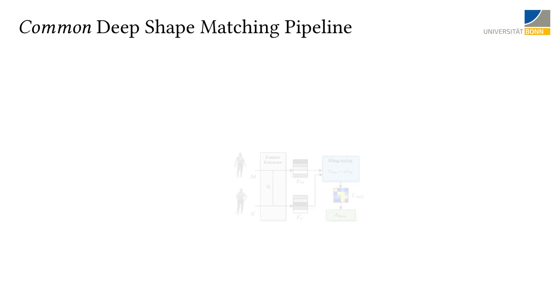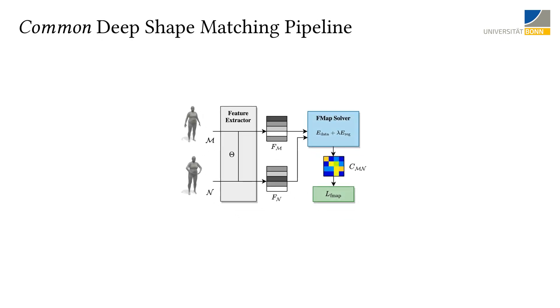Many successful deep shape matching methods rely on a common functional map pipeline to compute correspondences between shapes. The pipeline consists of a feature extractor to compute vertex-wise features for both input shapes. Additionally, a functional map solver is used to impose feature preservation as well as structural properties on the problem. The functional map is used during training time for loss computation.